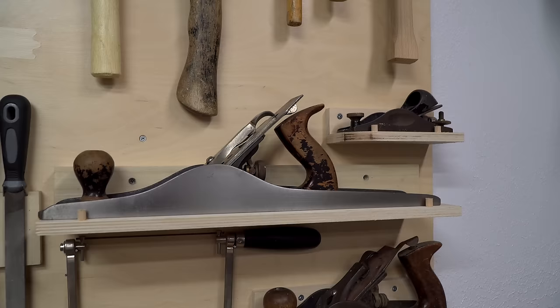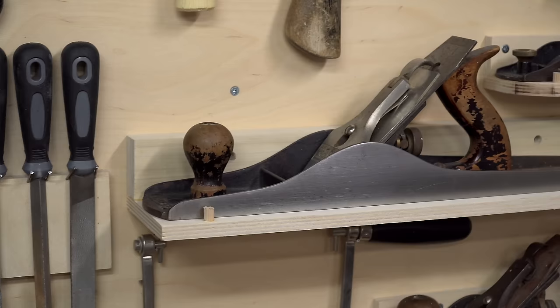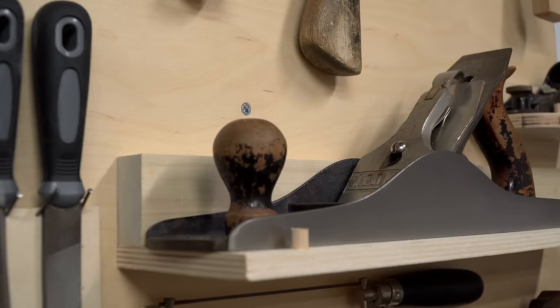So far, the planes have been the only items heavy enough to warrant the use of screws. And each of the plane holders is basically just an L-shaped shelf with a couple of small pegs to help prevent the plane from sliding off the front.